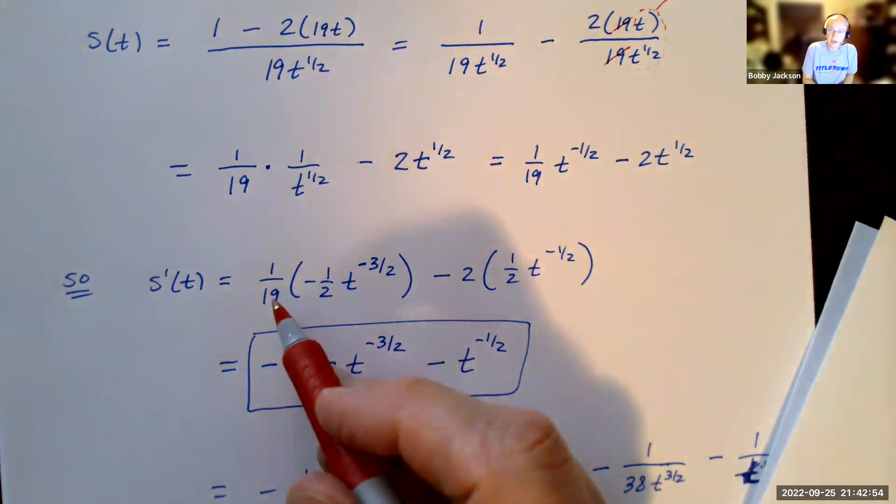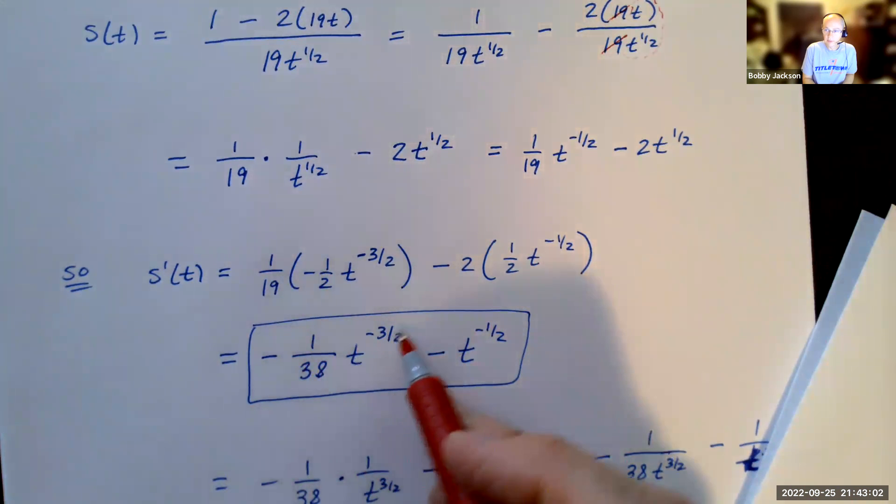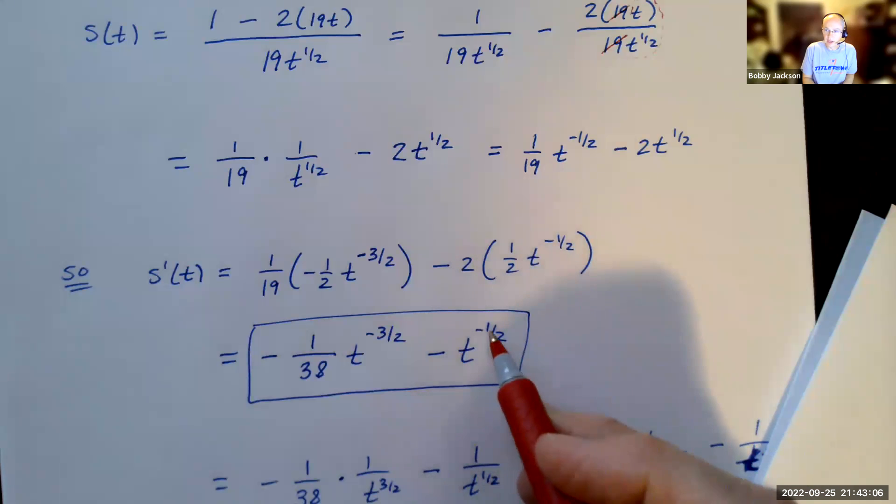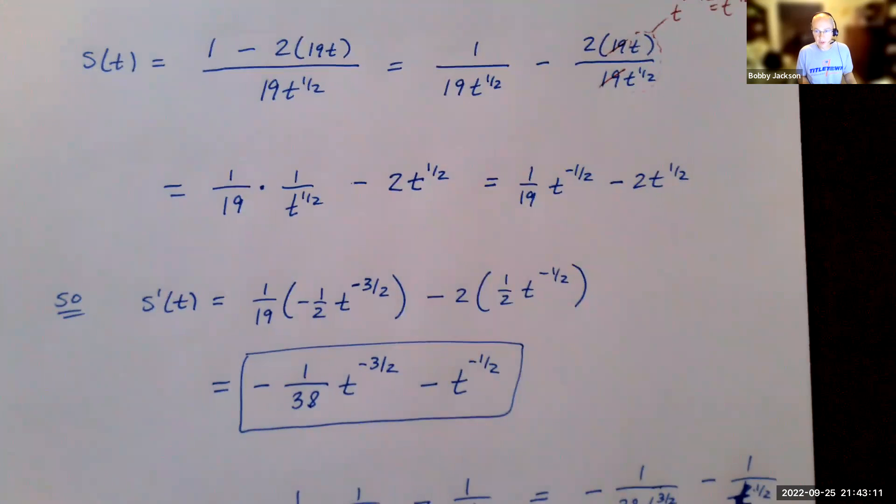Cleaning this up, then I get a negative 1/19th times or 1/19th times a negative 1/2 gives me negative 1/38th t to the negative 3/2. 2 times 1/2 is 1. So I just get negative t to the negative 1/2.